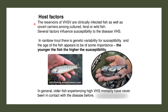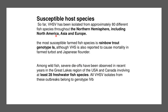The reservoir of VHSV includes clinically infected fish as well as covert carriers among cultured, feral, or wild fish. Several factors influence susceptibility to VHS. In rainbow trout, there is genetic variability for susceptibility, with younger fish having higher susceptibility. So far, the virus has been isolated from approximately 80 different fish species throughout these regions.